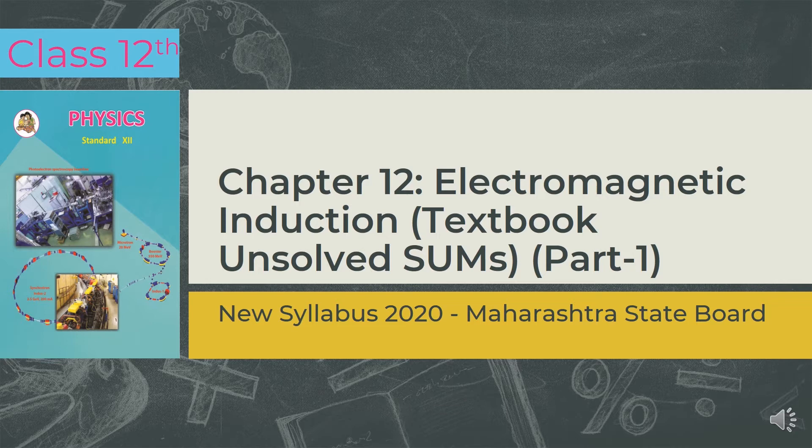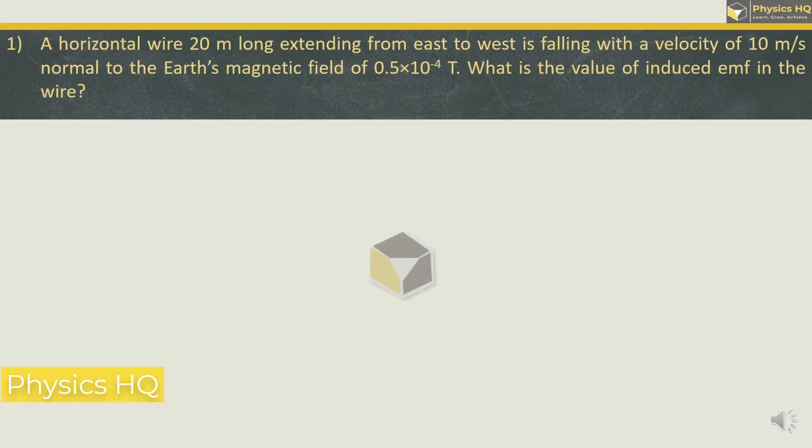So let us start with the first sum for this video. A horizontal wire 20 meter long extending from east to west is falling with a velocity of 10 meter per second normal to the earth's magnetic field of 0.5 x 10^-4 tesla. What is the value of induced EMF in the wire?